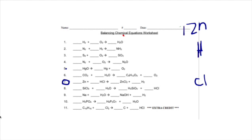So one ZN on this side, one ZN on the right side, one H on the left side, and two H's on the right side. We have one CL on the left side and two CLs on the right side.